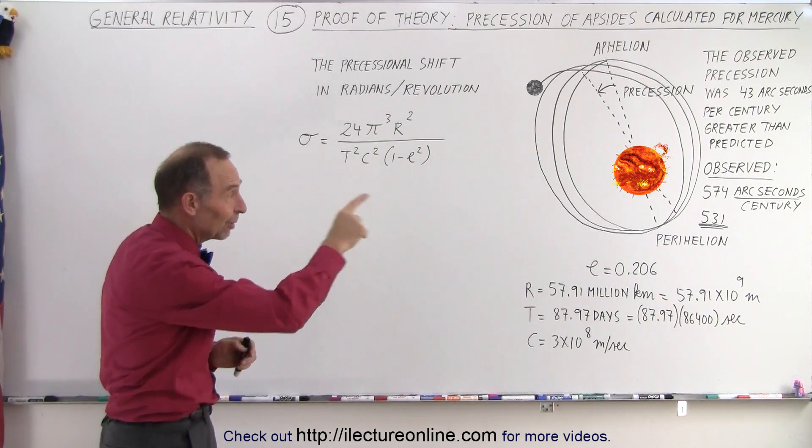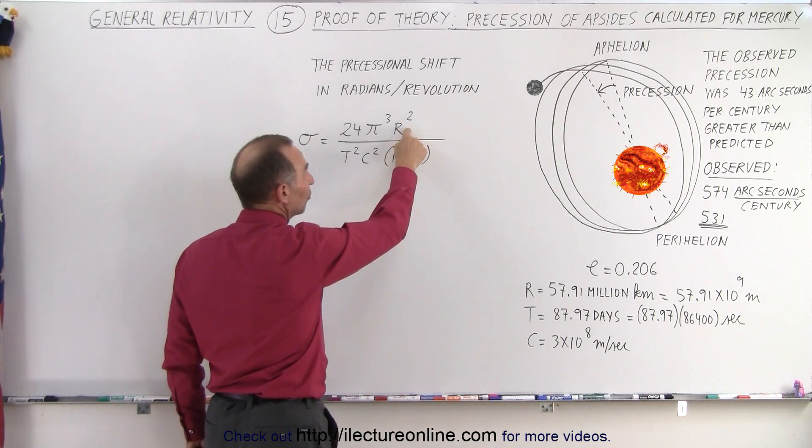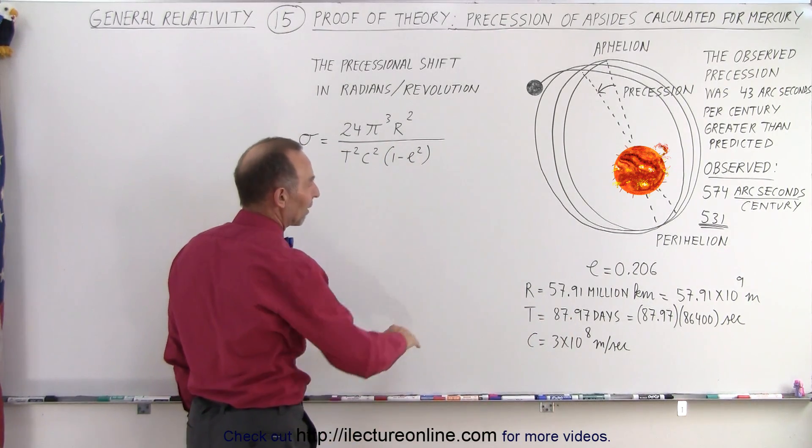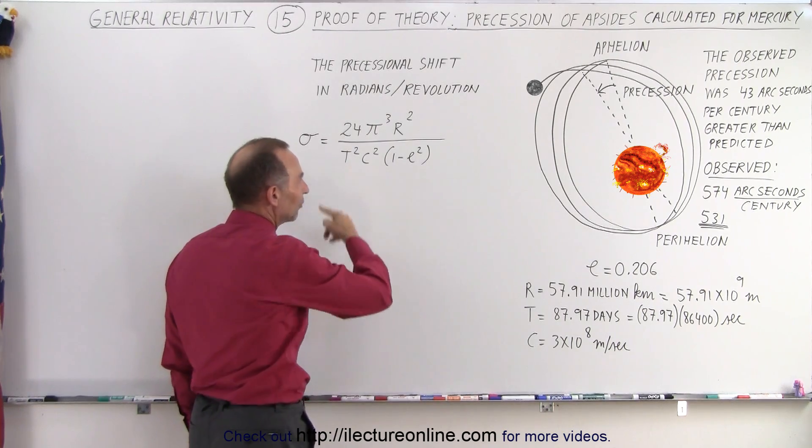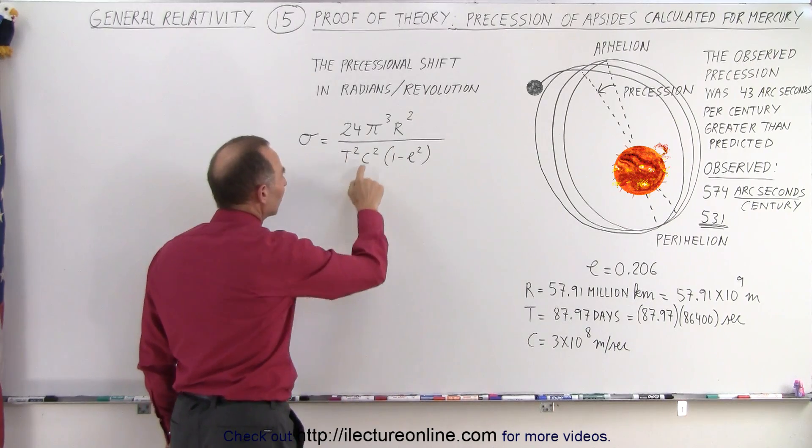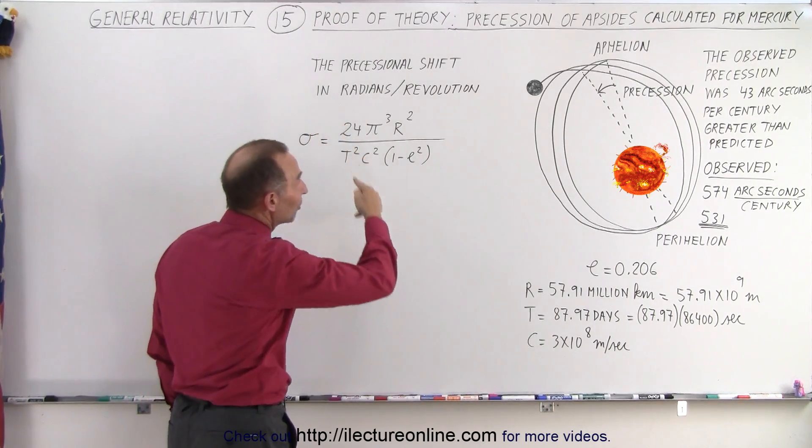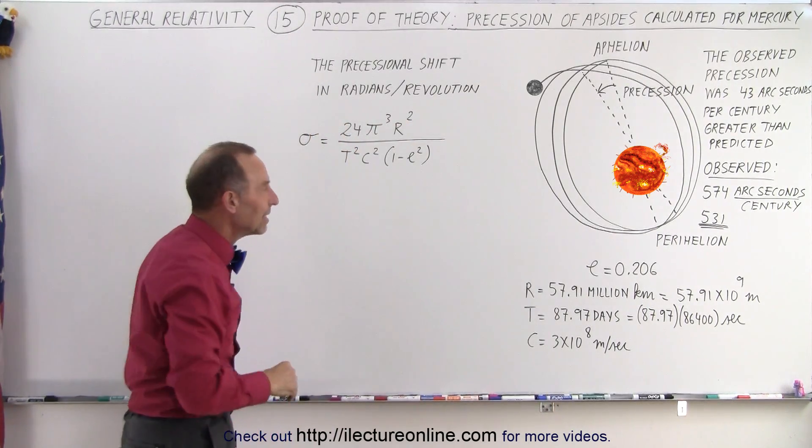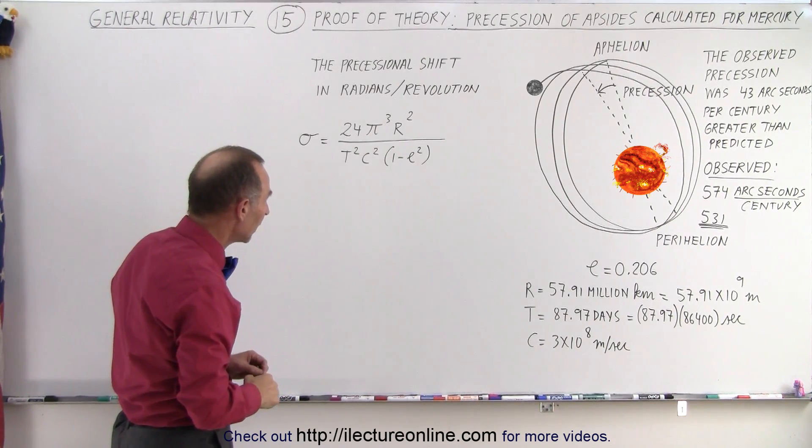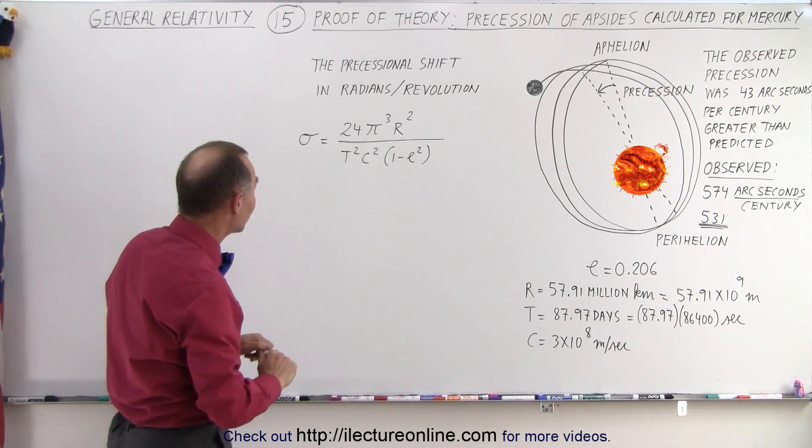Now, let's plug in the numbers and see if it comes out to be 43 arcseconds. Notice that r is the average distance between the Sun and Mercury, which is about almost 58 million kilometers. We have to convert up to meters. The period of the orbit of Mercury is almost 88 days. We have to convert up to seconds. This is the speed of light, and that's the eccentricity. And the result is the number of radians for each revolution around the Sun, for each 88 days or so. So let's go ahead and now calculate what that number is in terms of arcseconds per century.